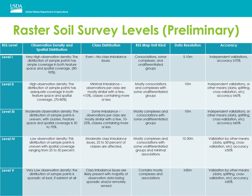Level one products have the highest documentation levels, highest working spatial resolution, and highest level of accuracy. These products might be developed for special projects where user need for detailed information is high. In contrast, level five raster soil survey products have the lowest documentation levels, coarse working spatial resolution, and lowest accuracy levels. These products might be developed where access is limited, high-resolution raster data products are not available for modeling, and there is not a high interpretive need for detailed information.